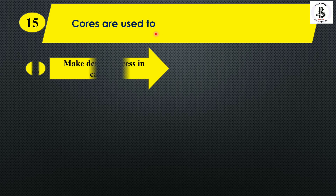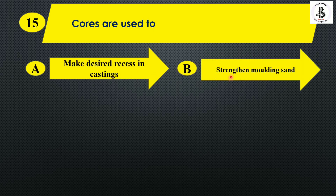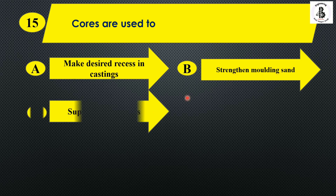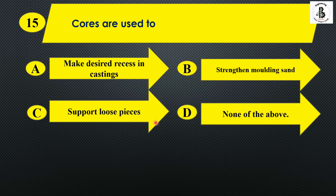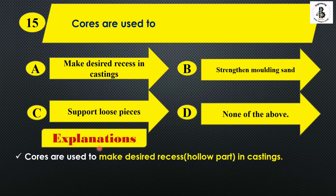The next question: cores are used to — option A: make desired recesses in casting; option B: strengthen molding cast sand; option C: support loose piece; option D: none of the above. Cores are used to make desired recesses or hollow parts in the casting, so the right answer is option A.